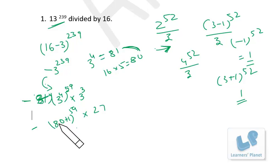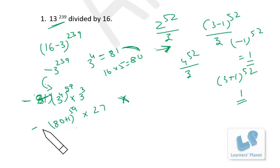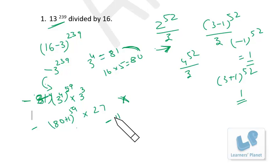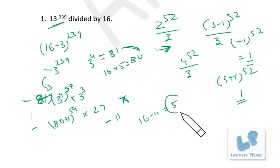You should be able to think through this without writing every step. Since (80+1)^59 gives remainder 1 when divided by 16, we're left with −1 × 27 = −27. Since 27 > 16, we subtract 16: −27 gives −11. So the expression gives remainder −11, which we convert to a positive remainder: 16 − 11 = 5. Therefore, 13^239 divided by 16 gives remainder 5.